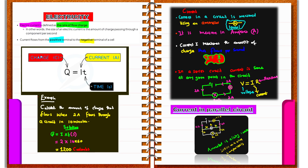Current is measured using an ammeter, measured in amperes. If current is given in milliamperes, divide by 1000 to convert to amperes. Current is a measure of the amount of charge that flows, so current equals charge divided by time. In a series circuit, the current is the same at any given point — if 2 amperes flows at one point, an ammeter anywhere in the circuit registers 2 amperes.